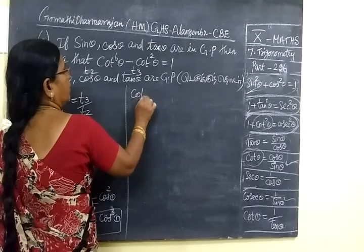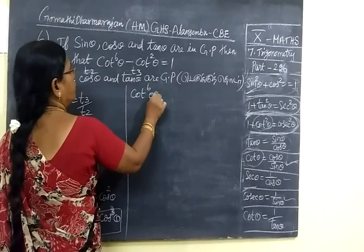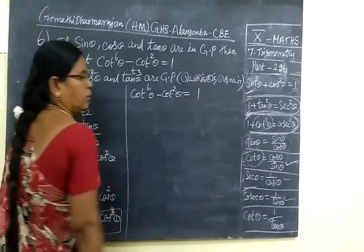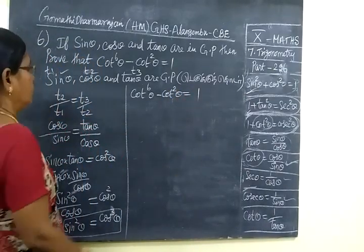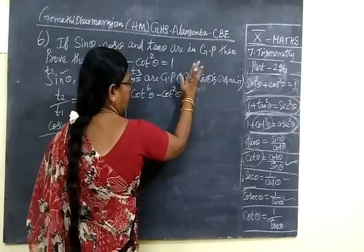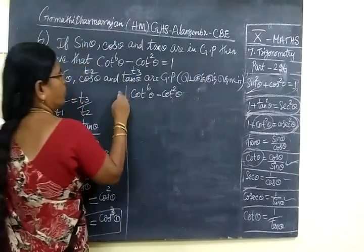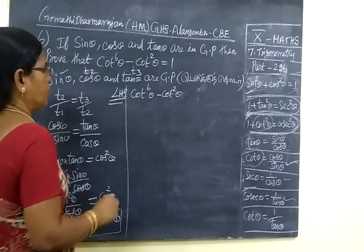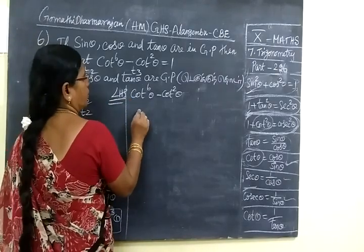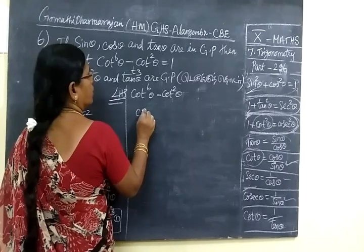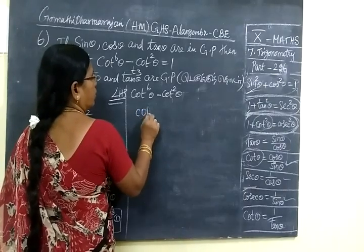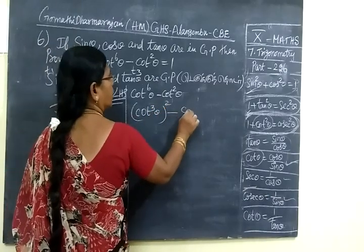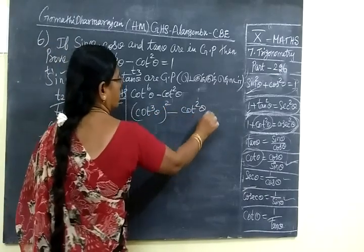The question is cos power 6 theta minus cos power 6 theta equal to 1. We have to prove. So you are considering LHS. Cos power theta cos by sine. Cos cube theta whole square minus cos square theta.